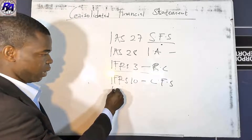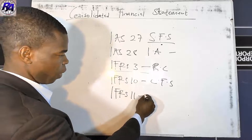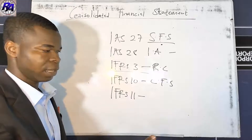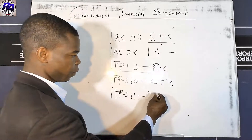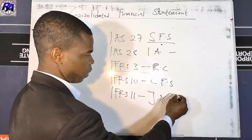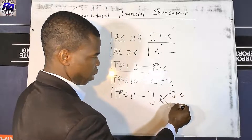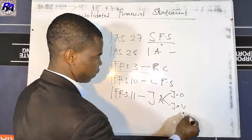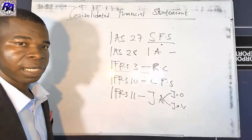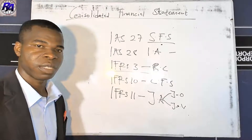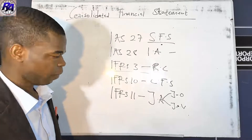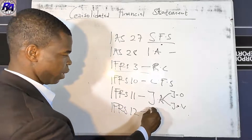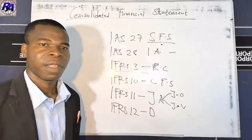Then we have IFRS 11, which covers joint arrangements — where two companies jointly control another entity. A joint arrangement gives rights to either joint operations or joint ventures. That is the fifth standard. We also have IFRS 12, which covers disclosure of interests in other entities.